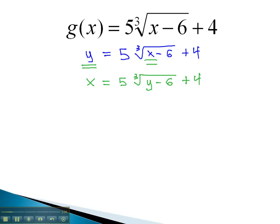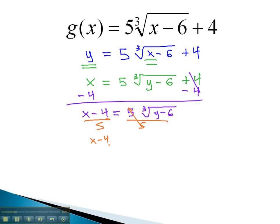In order to get to our inverse, we simply have to solve this equation for y. We know we must first isolate the radical by subtracting 4 to get x minus 4 equals 5 times the cube root of y minus 6, and then divide both sides by 5.